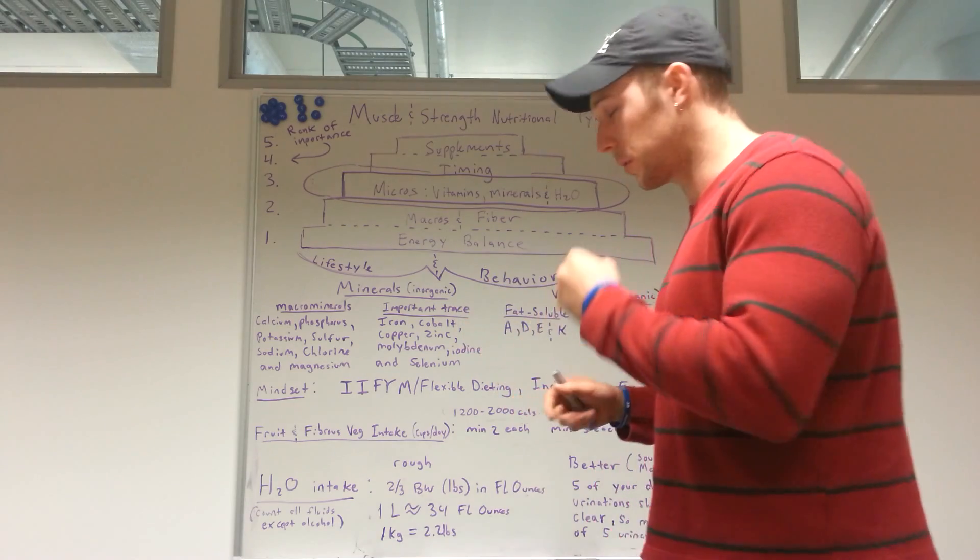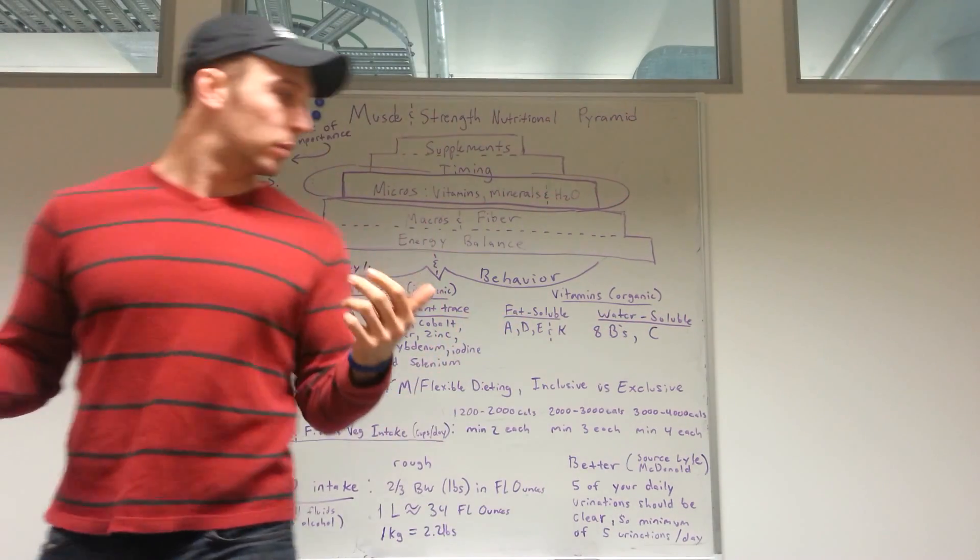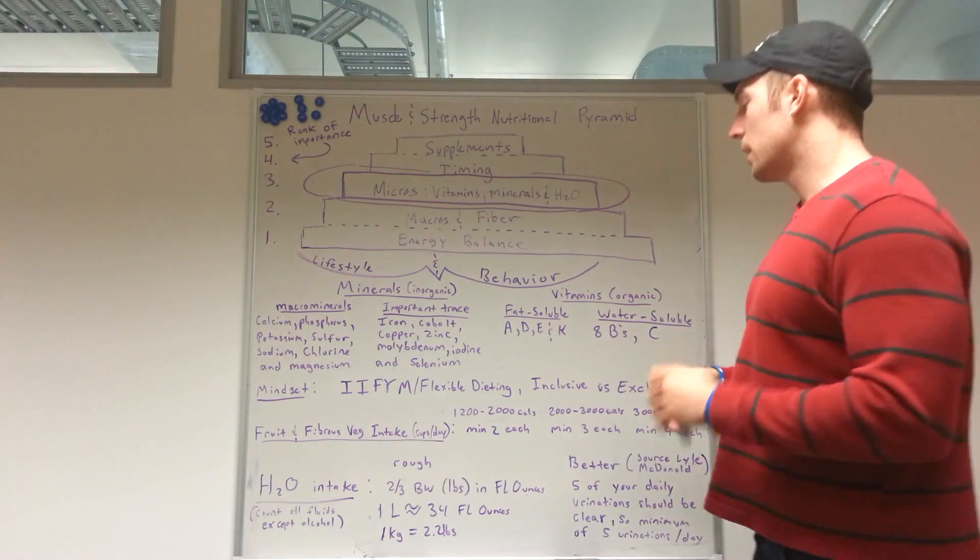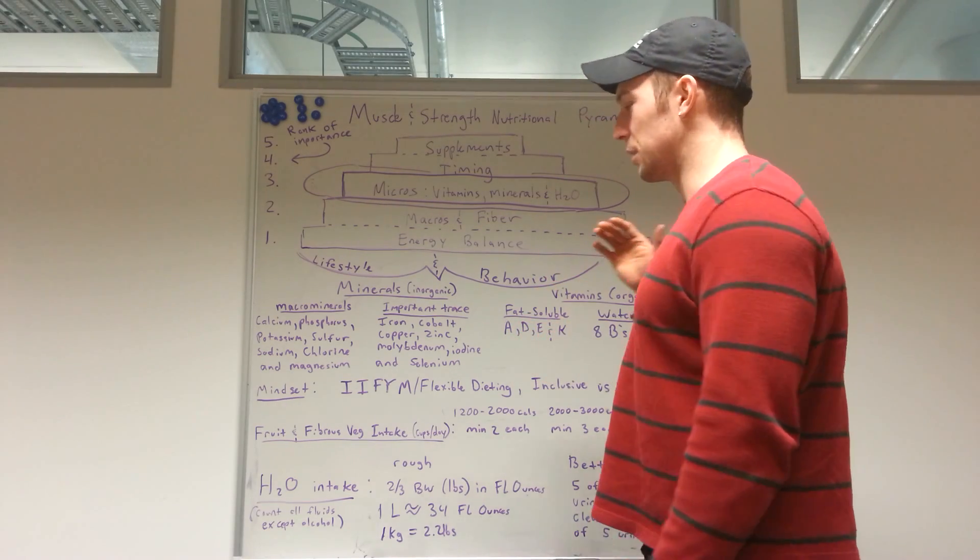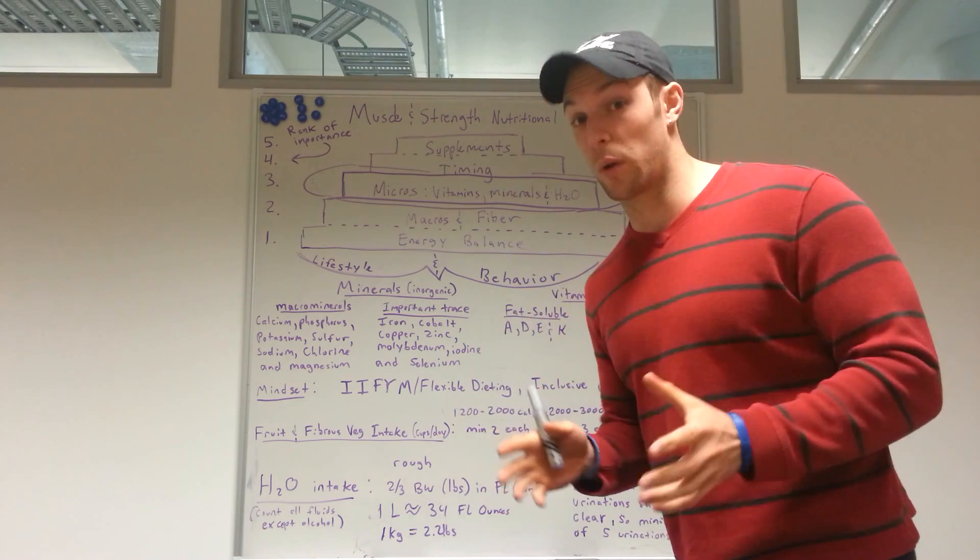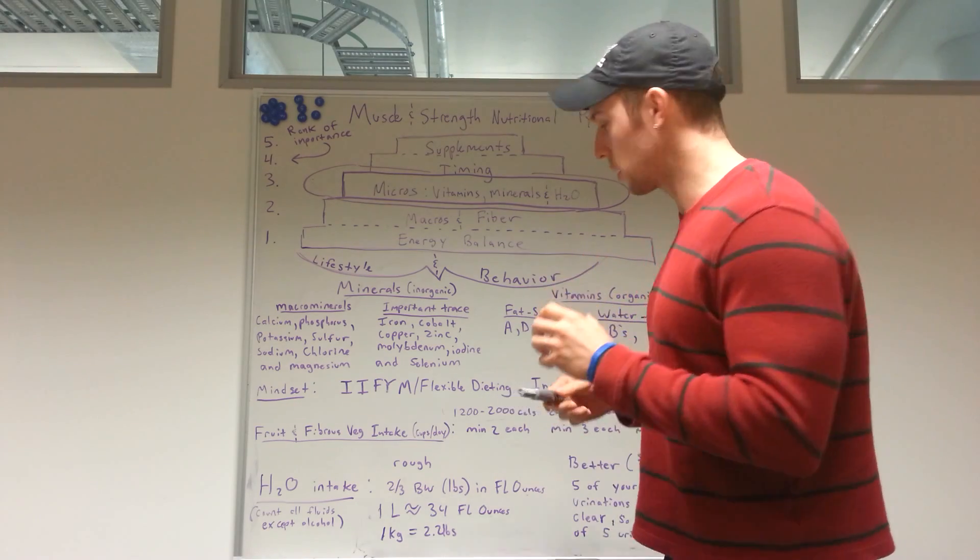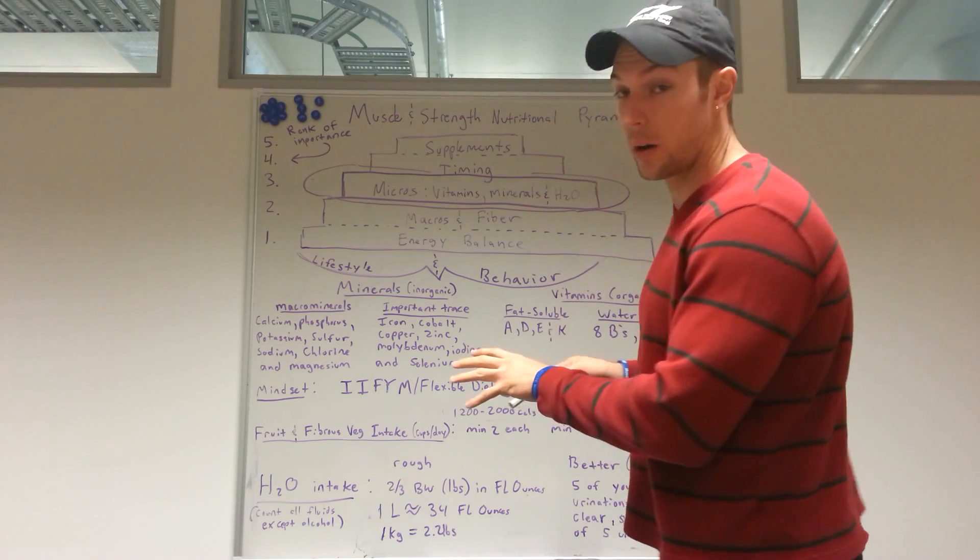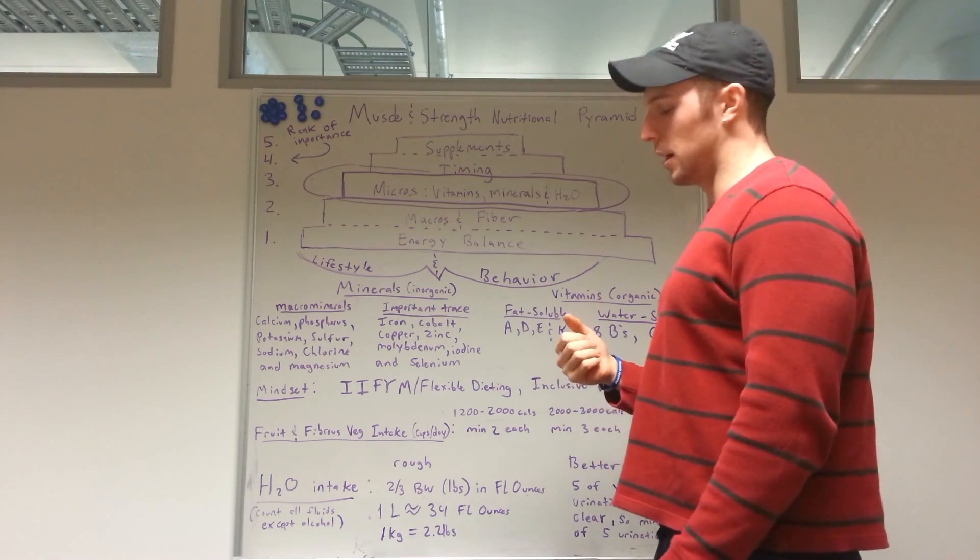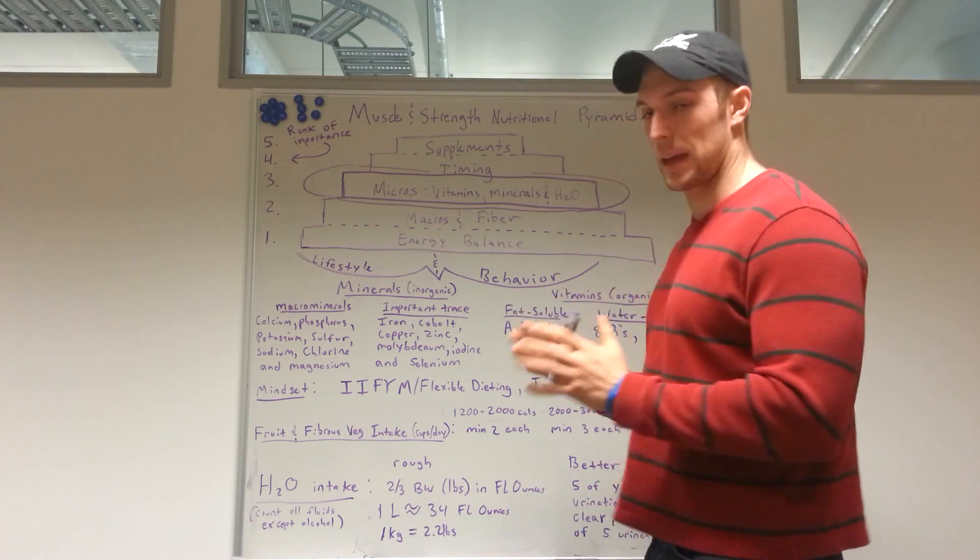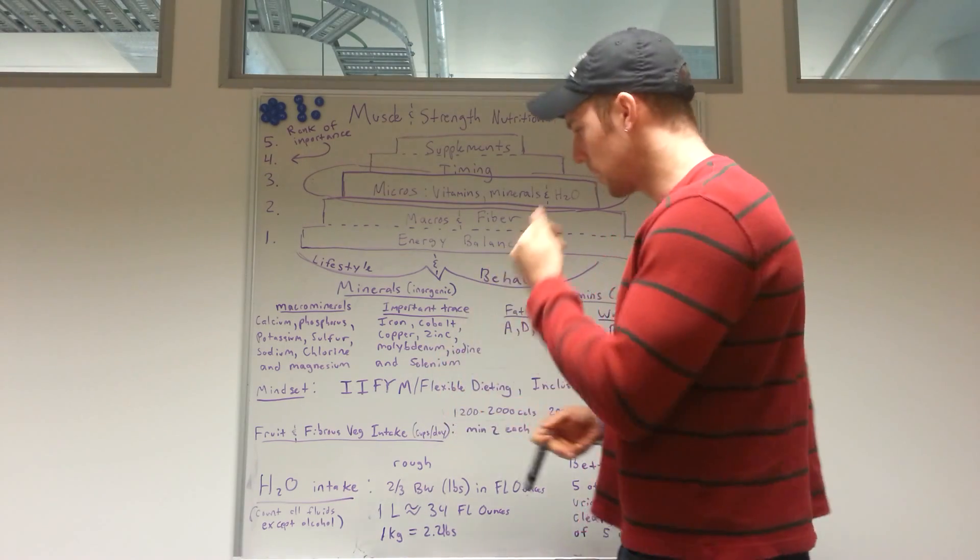Milligrams on down. Or if we do get up to grams, they're a couple of grams. So micronutrients, basically there are two broad categories of nutrition. We have our minerals, which are inorganic, and then we have our vitamins, which are organic.